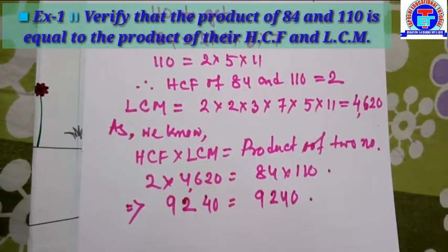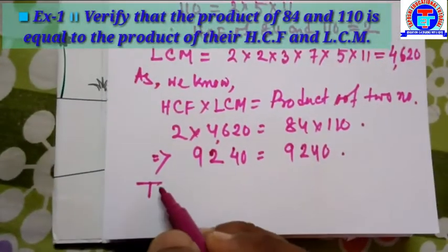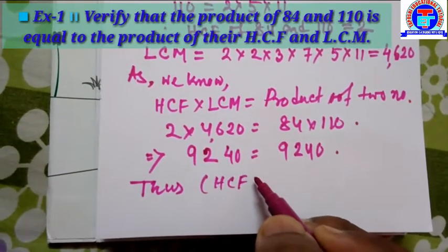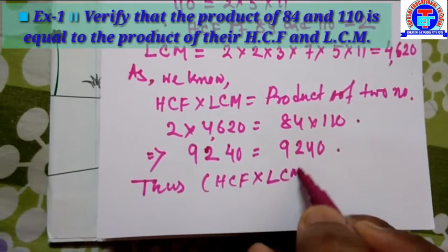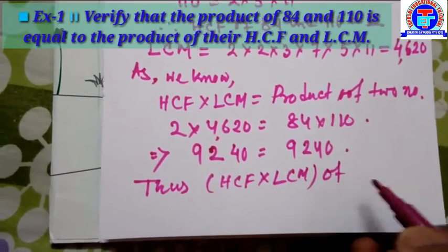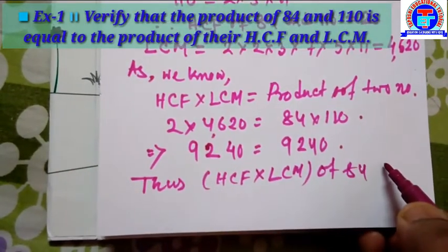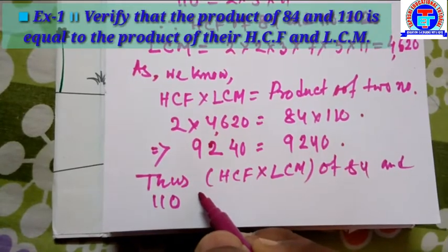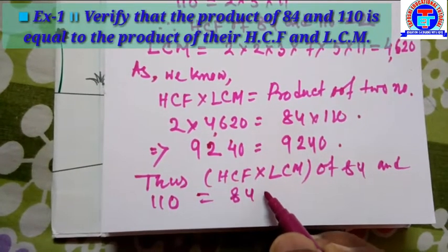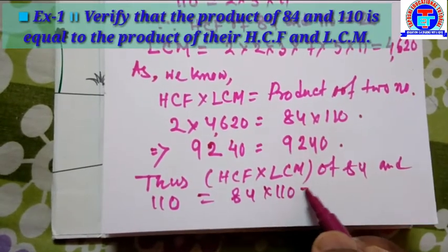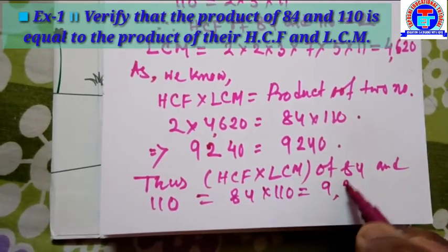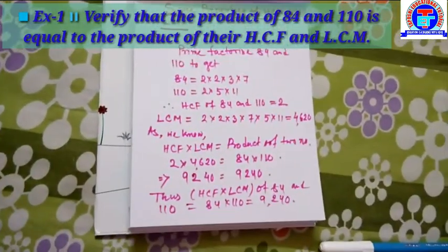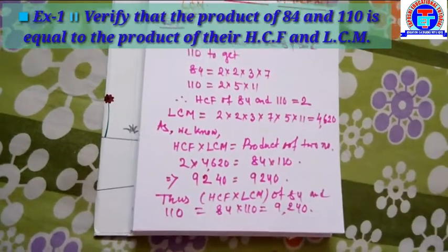Thus, we can write: HCF into LCM of 84 and 110 is equal to 84 into 110, which is equal to 9240. I hope you clearly understood what was discussed here.